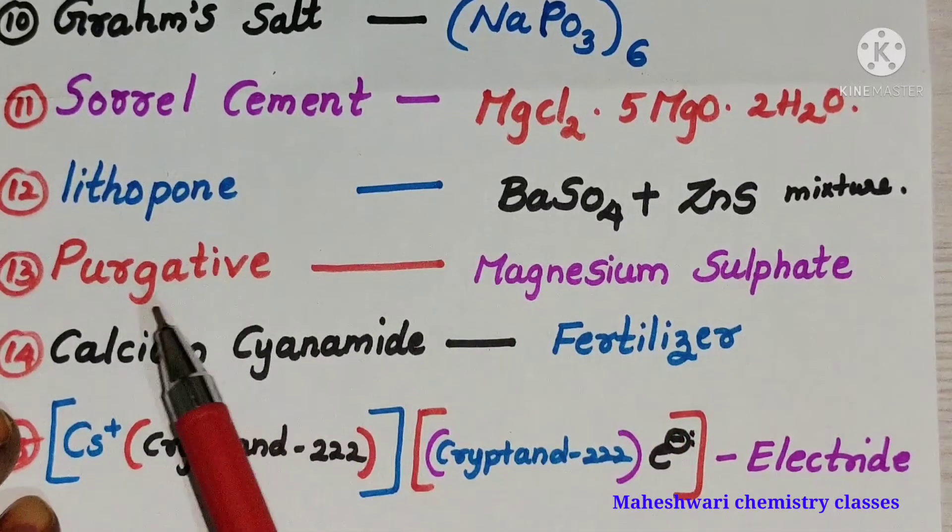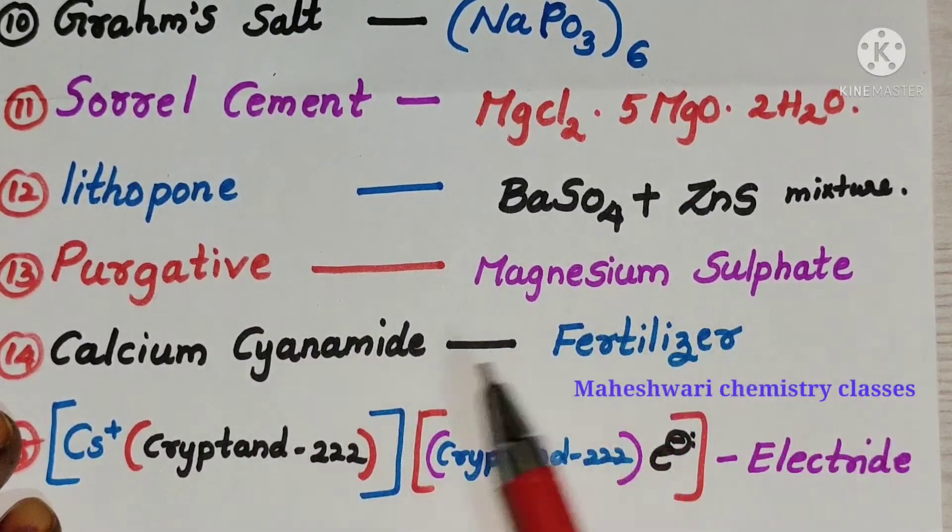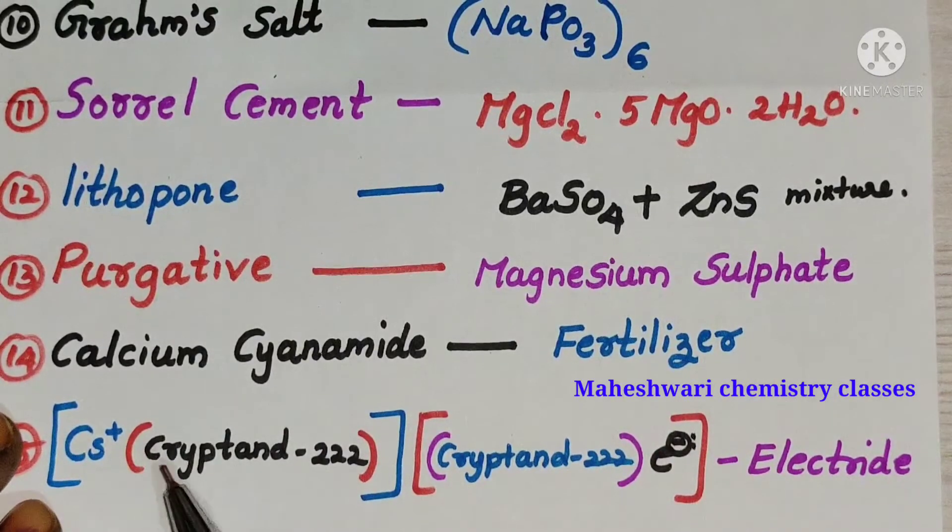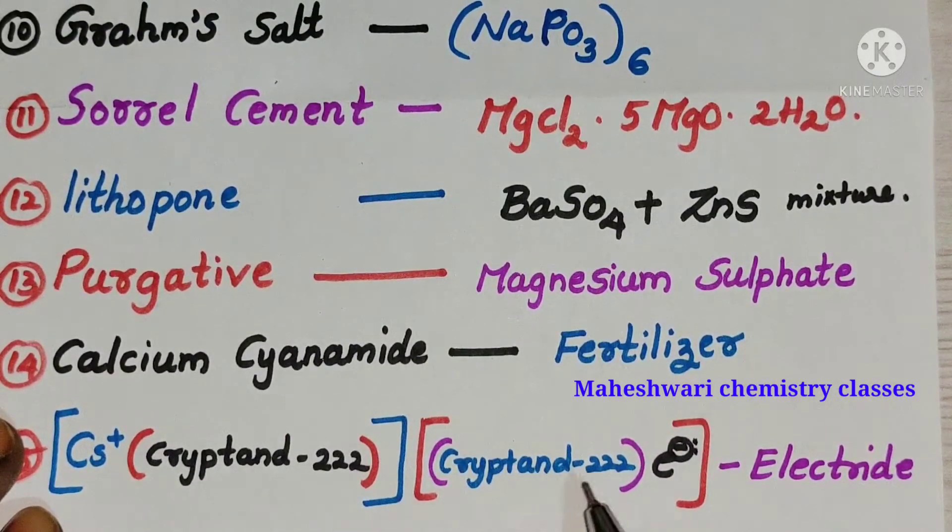Lithophone barium sulphate zinc sulphide mixture, purgative magnesium sulphate, calcium cyanamide fertilizer, caesium plus krypton triple two krypton triple two electron, it works like an electrolyte. Now I will explain.